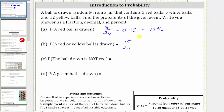Notice that 15-twentieths does simplify because 15 and 20 share a common factor of five. To simplify, we divide the numerator and denominator by five. 15 divided by five is three, and 20 divided by five is four, giving us a simplified probability of three-fourths. Converting to a decimal, three divided by four is equal to 0.75, which as a percentage is 75%.